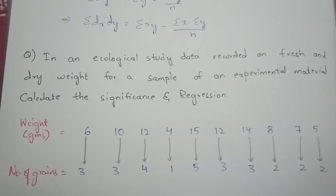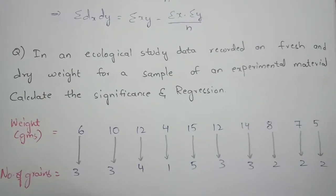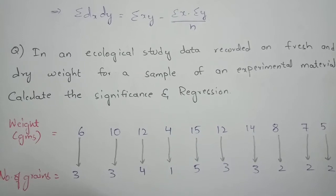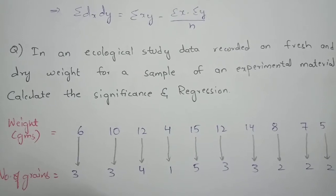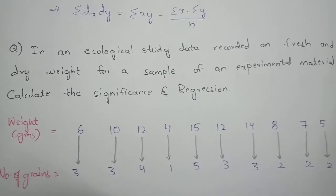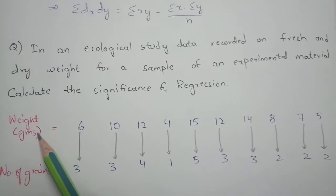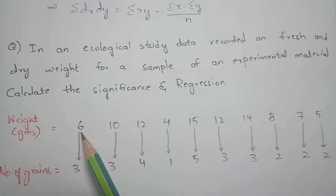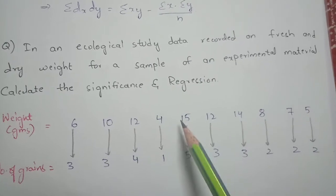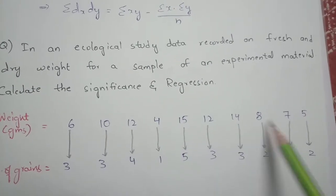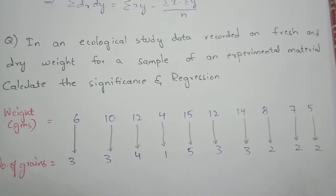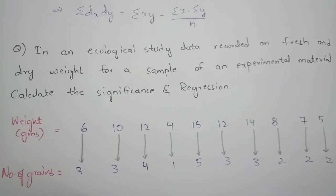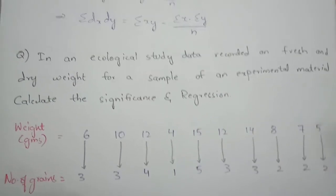In an ecological study, data recorded on fresh and dry weight for a sample of experimental material: calculate the significance and regression. The weight in grams values are 6, 10, 12, 4, 15, 12, 14, 8, 7, 5, and the number of grains are given below.